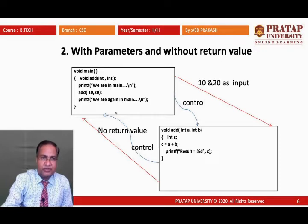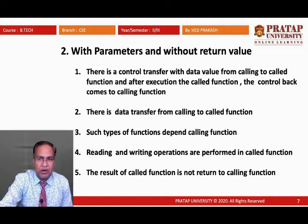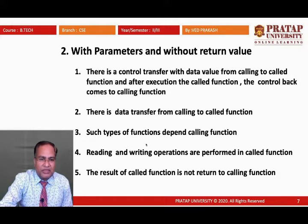Key points for functions with parameter and without return value: control transfers with data values from calling to called function; after execution, control comes back to the calling function. There is data transfer from calling to called function because of the parameter. Such functions depend on the calling function, reading and writing operations are performed in the called function, and the result is not returned to the calling function because no return type is provided.